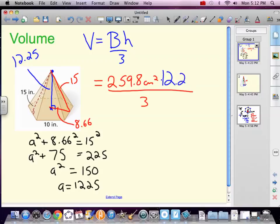Height of our shape: 12.25. A little Pythagorean theorem, little trig. 259.8 times 12.25 divided by 3 equals 1060.85 cubic centimeters. That is our volume.